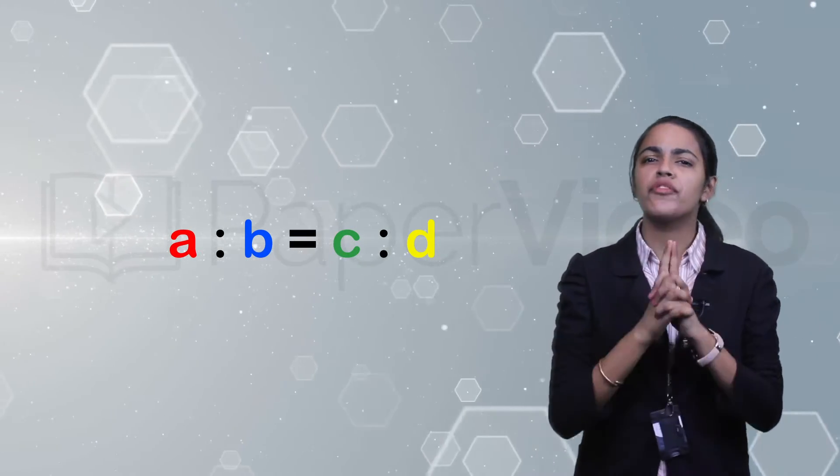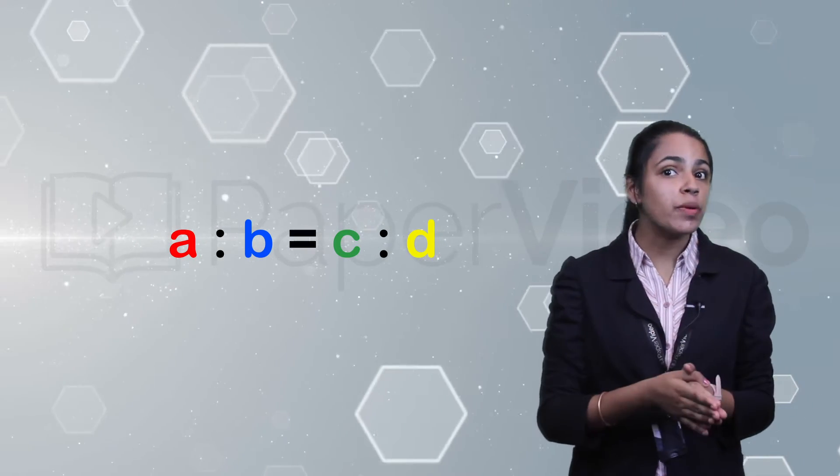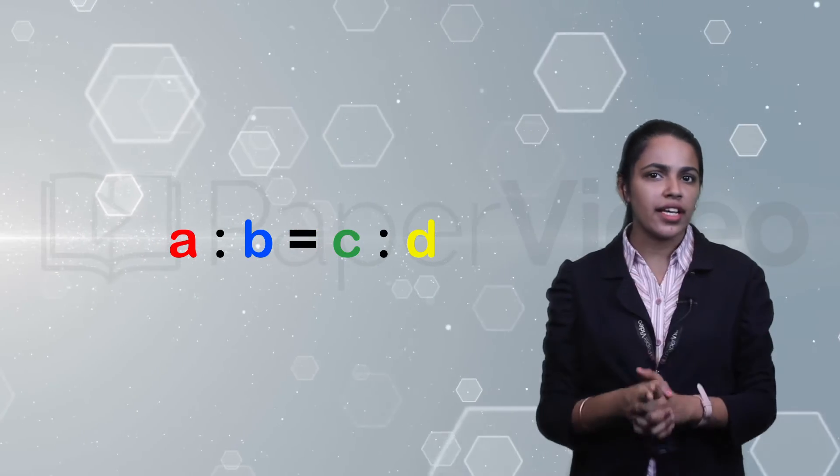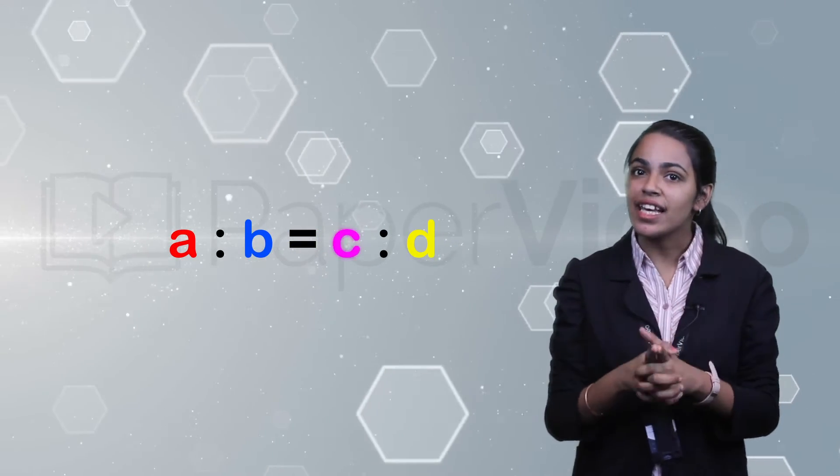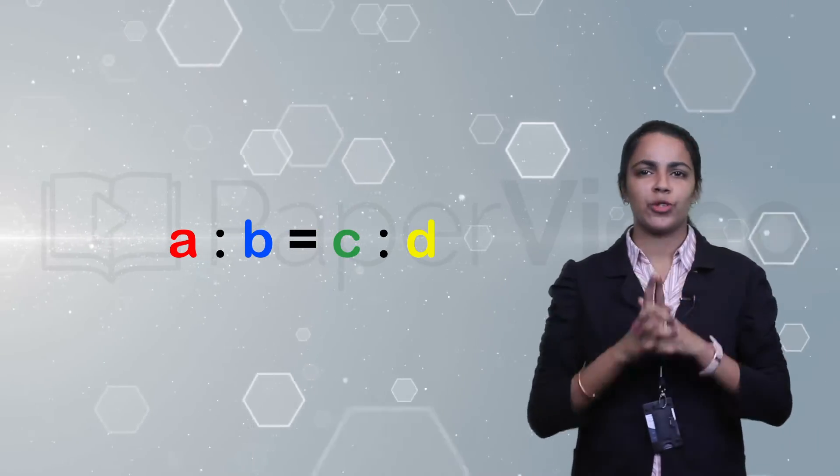This means that if two ratios A is to B and C is to D are equal, then the quantities A, B, C, and D are in proportion.